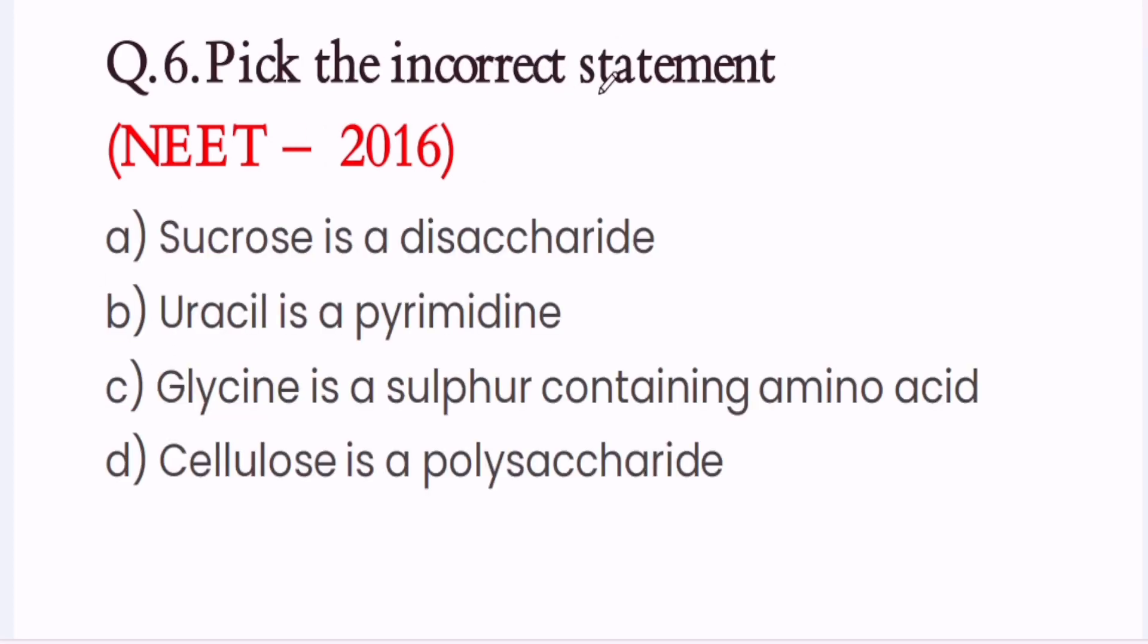Question 6. Pick the incorrect statement. A. Sucrose is a disaccharide. B. Uracil is a pyrimidine. C. Glycine is a sulfur containing amino acid. D. Cellulose is a polysaccharide. So here the correct option is C. Glycine is a sulfur containing amino acid.